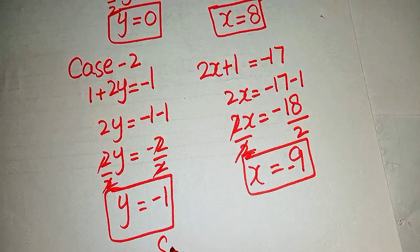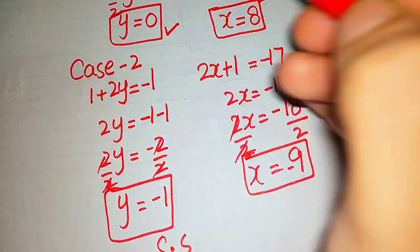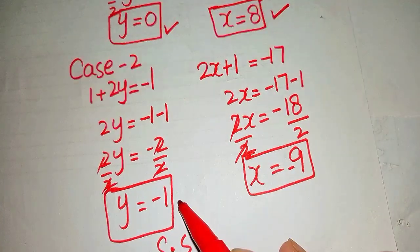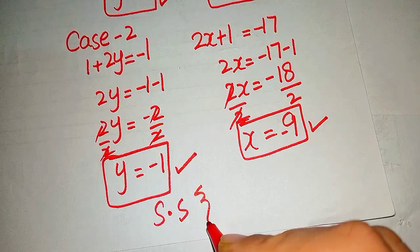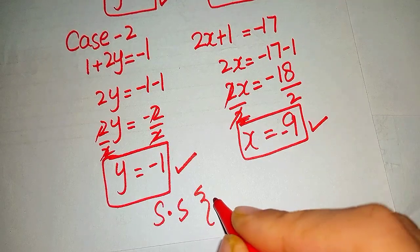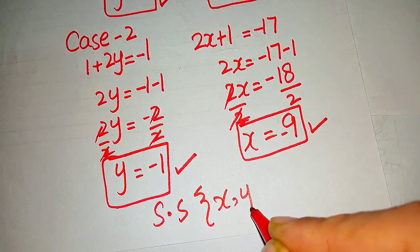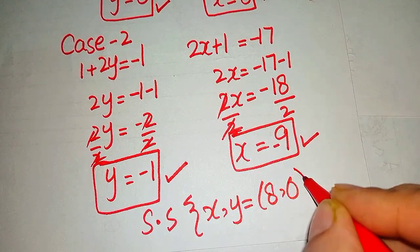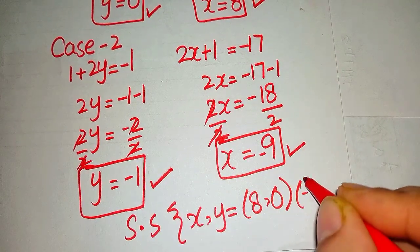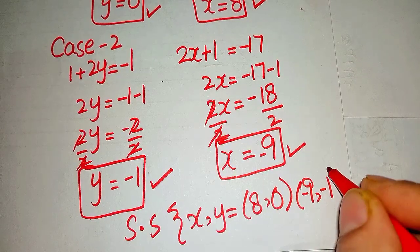So we can say that the solution set for our given equation is (8, 0) and (-9, -1). We can write it as x, y values: (8, 0) and (-9, -1).